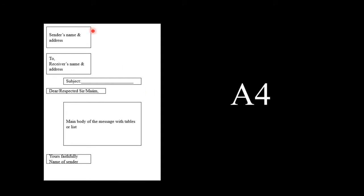Obviously, the format will be the same. First, we have the sender's name and address, then receiver's name and address, then the subject will be cancellation of reservation, then appropriate address, and we will write the main message here, and at last the signature with 'yours faithfully.'